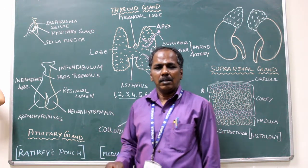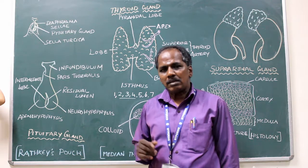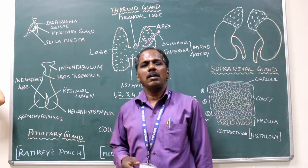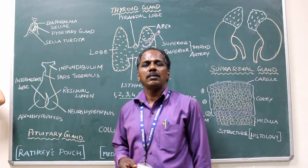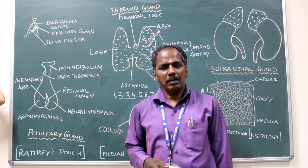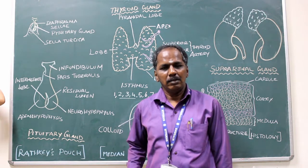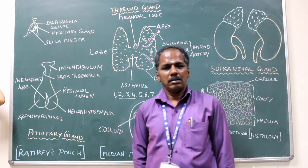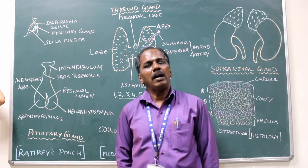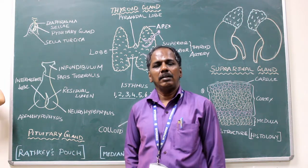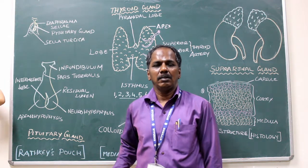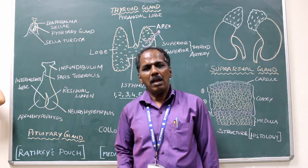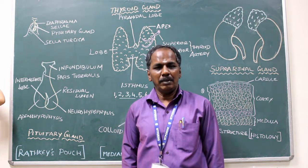The endocrine glands are: pituitary, thyroid gland, parathyroid gland, pancreas, suprarenal or adrenal gland, testis in male and ovary in female.